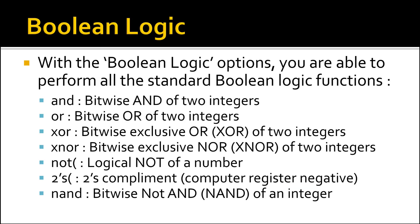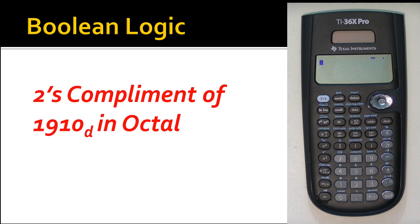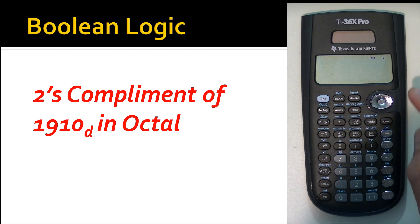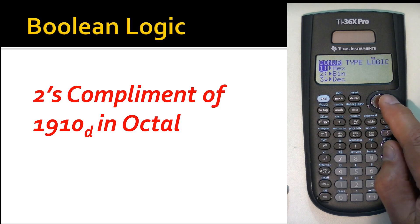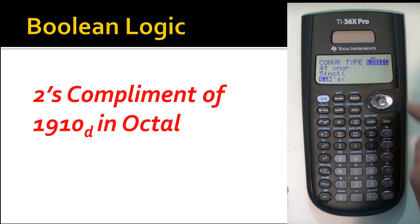Hit Enter — it converts 125 to octal and gives 175, shown with a little 'o' for octal, just as a little 'b' means binary and 'h' means hex. For Boolean logic, the calculator supports AND, OR, XOR, XNOR, and NOT. The key one to cover here is two's complement — important for computer engineering, as it's used in internal communication registers to represent negative numbers.